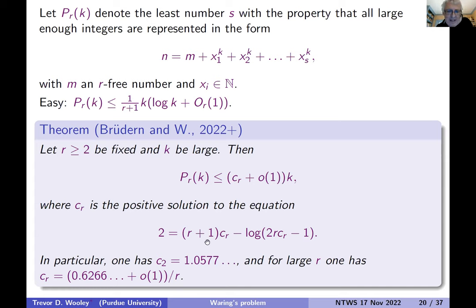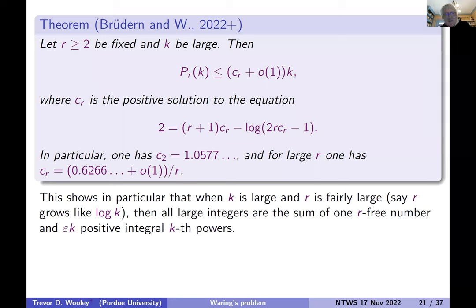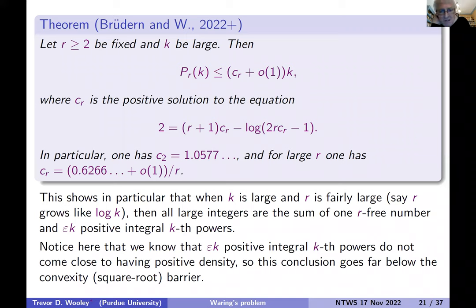So I'd like to expand a little bit on that. If you think of r as growing slowly with k, then you've got essentially epsilon k positive integral k-th powers. And this set of k powers represents a very thin set of integers. So we've got an r-free number plus a very thin set representing all large integers. So this is certainly a subconvexity result in the circle method. You have to beat the square root barrier, and that's exactly what happens.